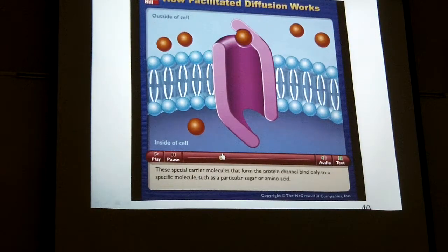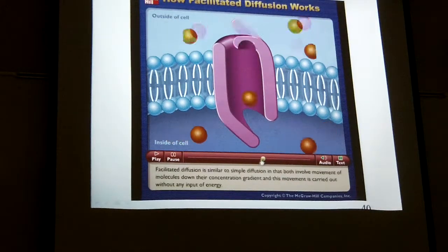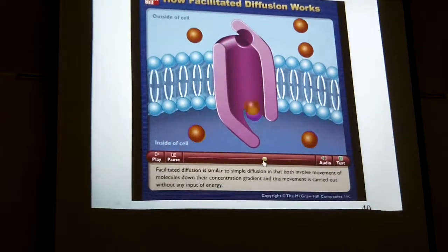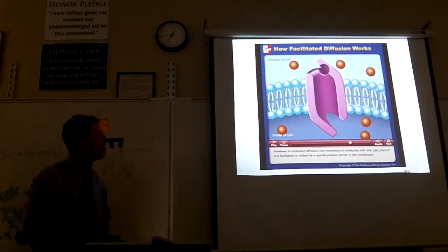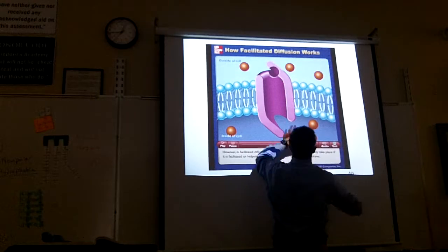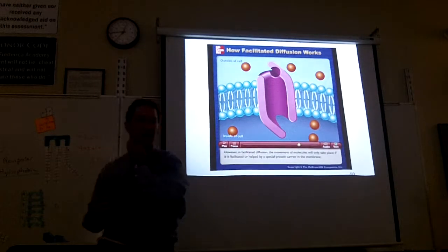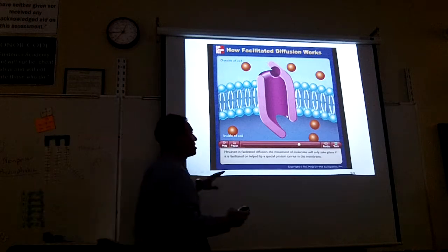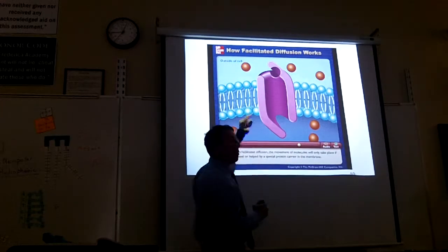This protein helps move molecules in — you can see it pulling them in. Those molecules wouldn't be able to get in if this protein wasn't there. We call it facilitated diffusion. Things are still moving from high concentration to low concentration, but this protein is facilitating — it's helping it along. Could stuff go out of that? Stuff could go out if the concentration gradient were reversed — if there were high concentration inside and low outside, it might go the other direction.